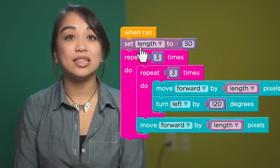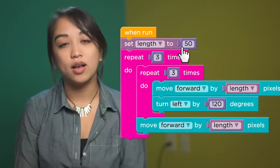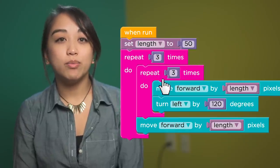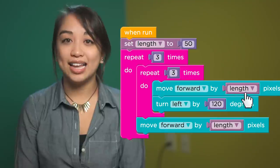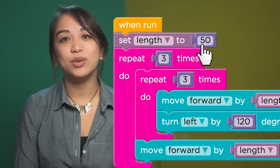In this puzzle, we're going to be using a variable that will set the length of the line our artist draws. Later on in our code, the move forward block will look at that length variable to see what value you've set it to.